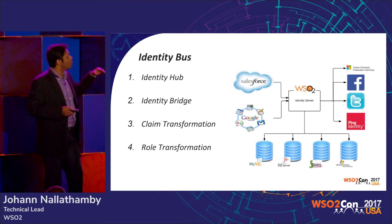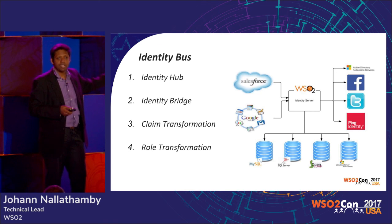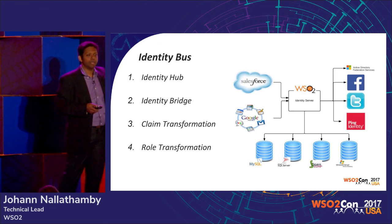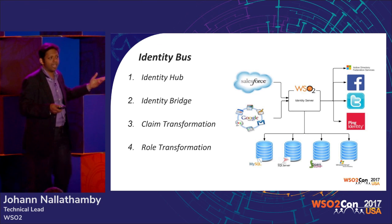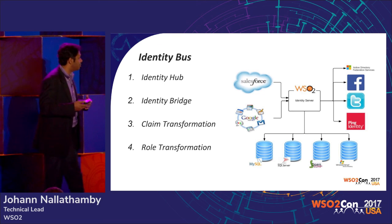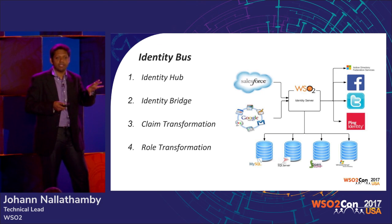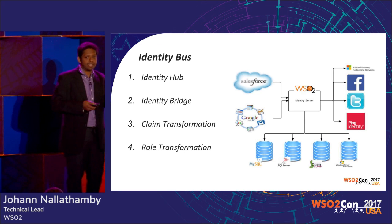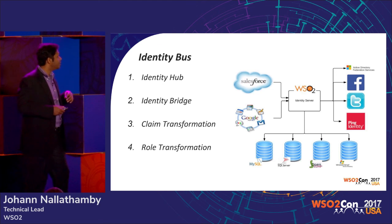Identity bridging allows translation between protocols — service providers may talk SAML while identity providers talk OpenID Connect or vice versa. Claim transformation handles the mapping between different claim dialects, such as between company X's standard OpenID Connect claims and company Y's custom claims. Role transformation converts role definitions between organizations so they make sense on both sides.